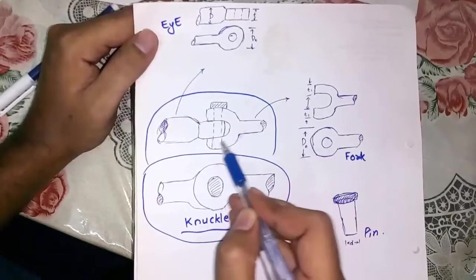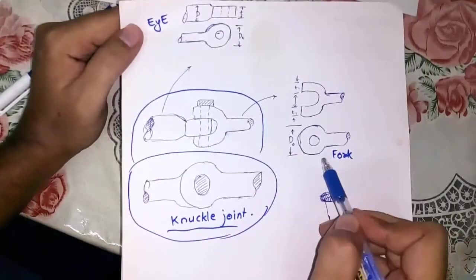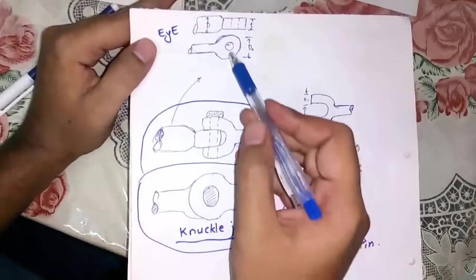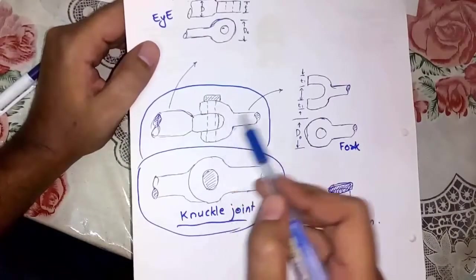And this is top view. This part which is like a catapult is fork, and this part which is fastened between the two legs of the fork is called eye. And the part which is used to fasten the fork and eye is called pin.